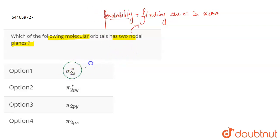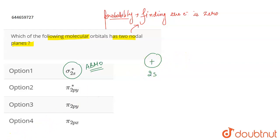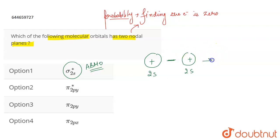Now if we talk about the first one, which is σ*2s, it means that this is an anti-bonding molecular orbital, which means that the 2s orbital destructively interferes with the other 2s orbital — only then an anti-bonding molecular orbital will be formed. The destructive interference is represented by the negative sign.